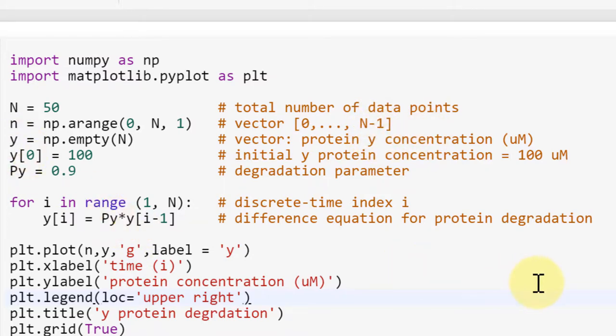Small y represents protein y concentration. The unit is micromolar and initially the values are all empty. Y of zero is the first initial y protein concentration and we say it is 100 micromolar.